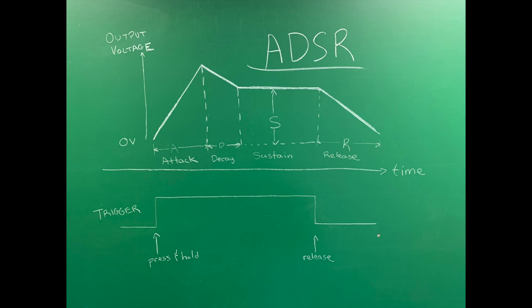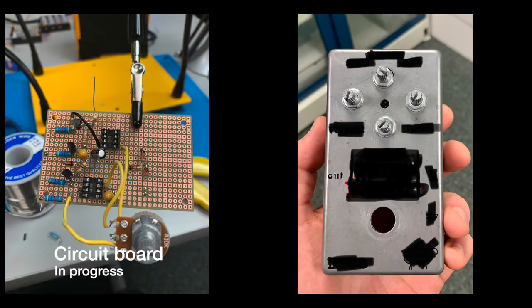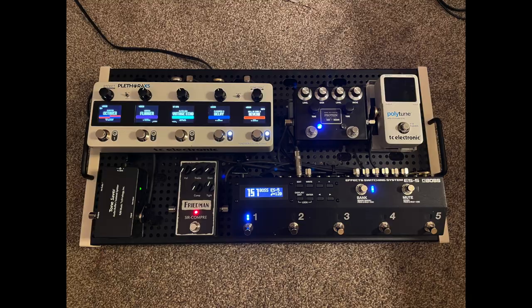For example, it is commonly used in conjunction with a voltage-controlled amplifier to shape the volume of an audio signal, such as when a key is pressed on a synthesizer. But this brings us back to the purpose of this ADSR generator. The final product will be in guitar stomp box form, and its intended use, simply put, is to creatively manipulate the parameters of audio effects.